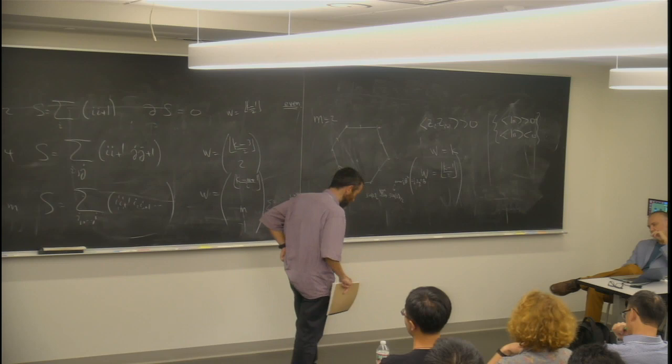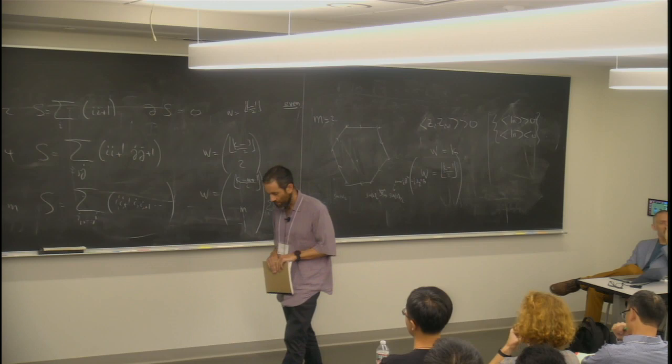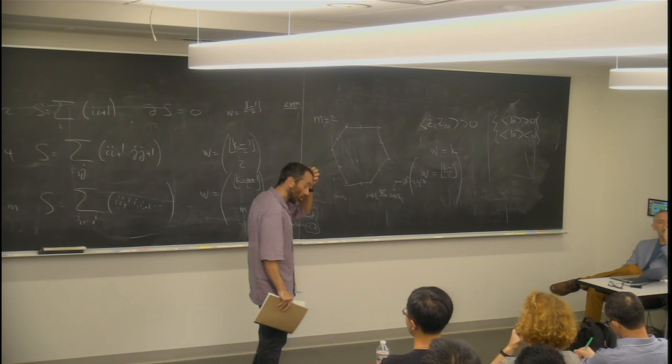And so in the search for such integers, symmetry has historically played an important role. For example, if we spontaneously break a Z2 symmetry, then the number of ground states in the thermodynamic limit is two, which is an integer which is different from one, which would be the number of ground states in a paramagnetic phase.